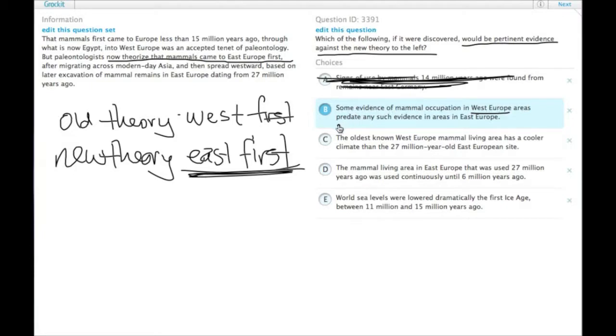So, there's some evidence that's before any such evidence in East Europe. This basically says West first right here. So, this one, without any of these dates and millions of years, this one tells us that if it's true, it would be pertinent evidence against the new theory because it says the West is earlier. Choice B.